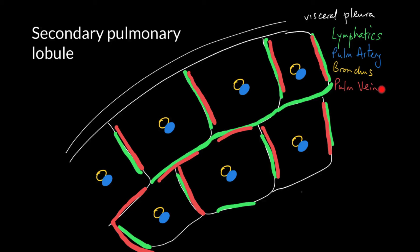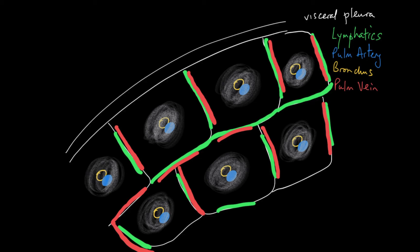The pulmonary vein carries oxygenated blood and the pulmonary artery carries deoxygenated blood, hence the blue and the red. When you get a central lobular nodule, it collects around that bronchovascular bundle in the centre of the secondary pulmonary lobule. Central lobular nodules tend to be rather ill-defined and, because of their position with respect to the bronchus and the artery, tend to be a fair distance away from a pleural surface.